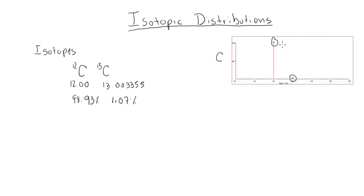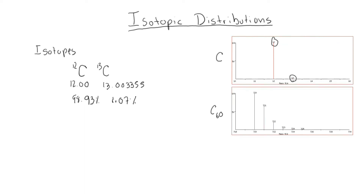As you increase the number of atoms, you have more of a chance that one carbon can be replaced by the non-monoisotopic element. In this case, we have the isotopic distribution for C60, or 60 carbons. The base peak — the most abundant peak — is still coming from carbon-12. However, our M+1 ion, which is one mass unit above the monoisotopic, is now much larger than it was with only one carbon, because when you have 60 atoms it is more likely that one of those carbons will be carbon-13.